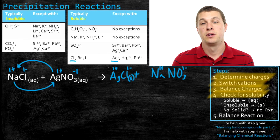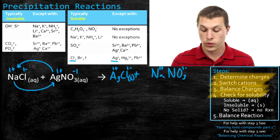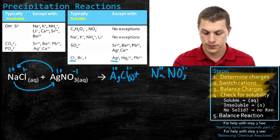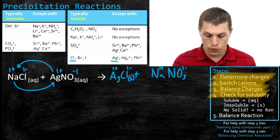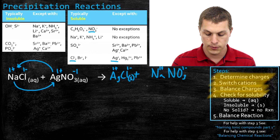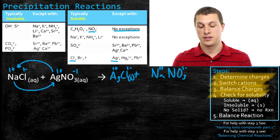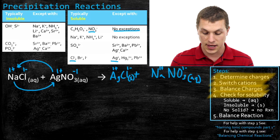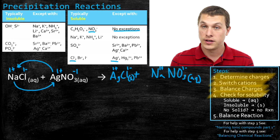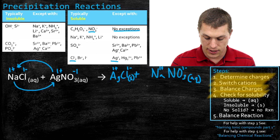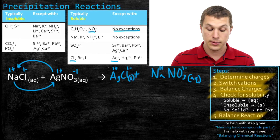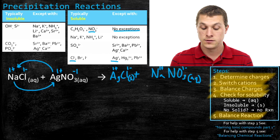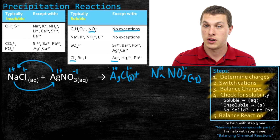We already know this is a precipitation reaction. Our remaining question is: do we form two solids or one? For sodium nitrate, we look for sodium or nitrate in our tables. Right at the top we see nitrate with no exceptions — anything containing nitrate is soluble — so we write aqueous. We have a precipitation reaction: solid silver chloride and aqueous sodium nitrate. The last step is to balance the chemical reaction. We have the same number of silvers, chlorines, sodiums, and nitrates on both sides, so this reaction is already balanced.